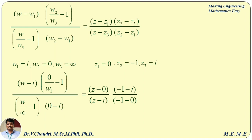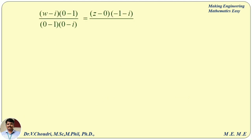Now, we know that any value divided by infinity equals 0. Applying this condition, we get the simplified result. We simplify the left-hand side: (w minus i) times minus 1, divided by minus 1 times minus i. On the right-hand side, see the expression that follows.